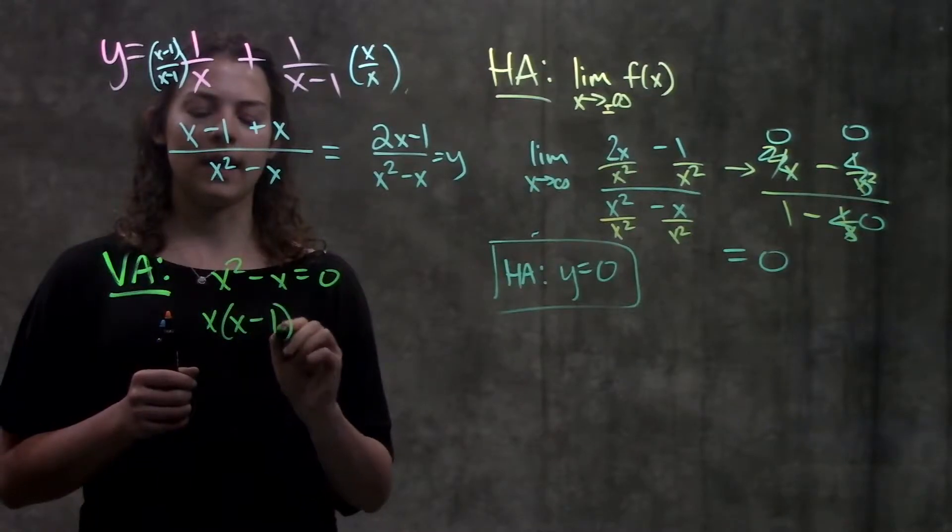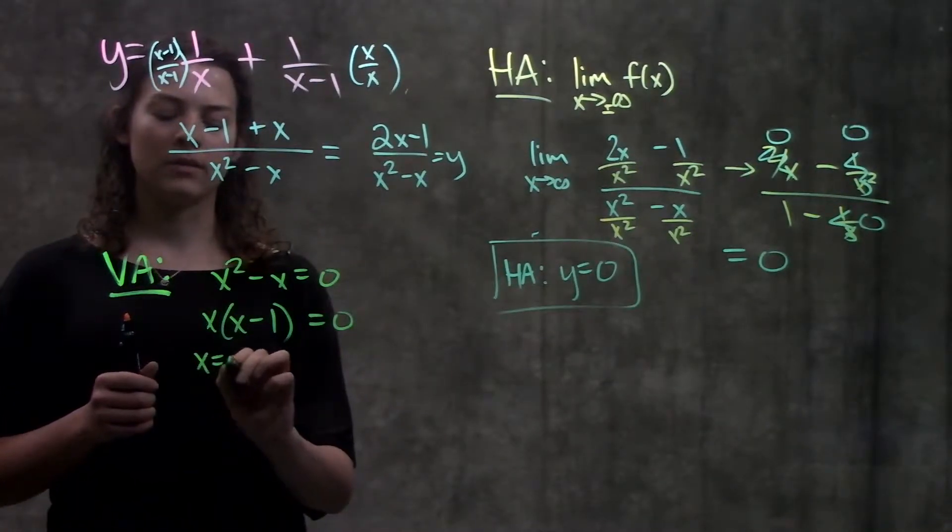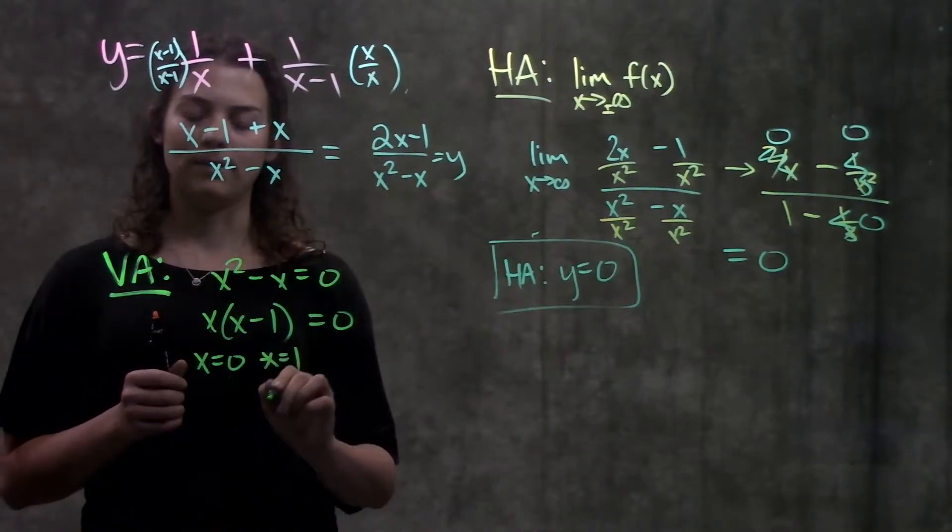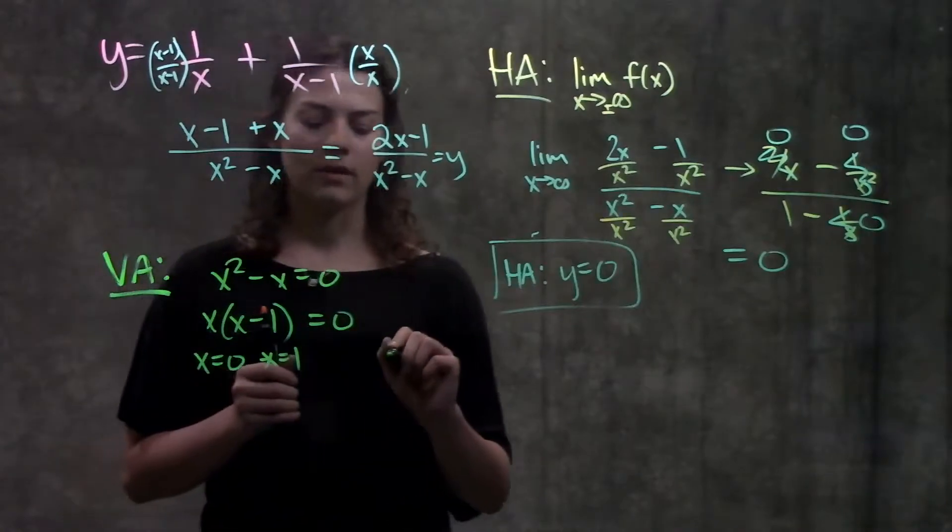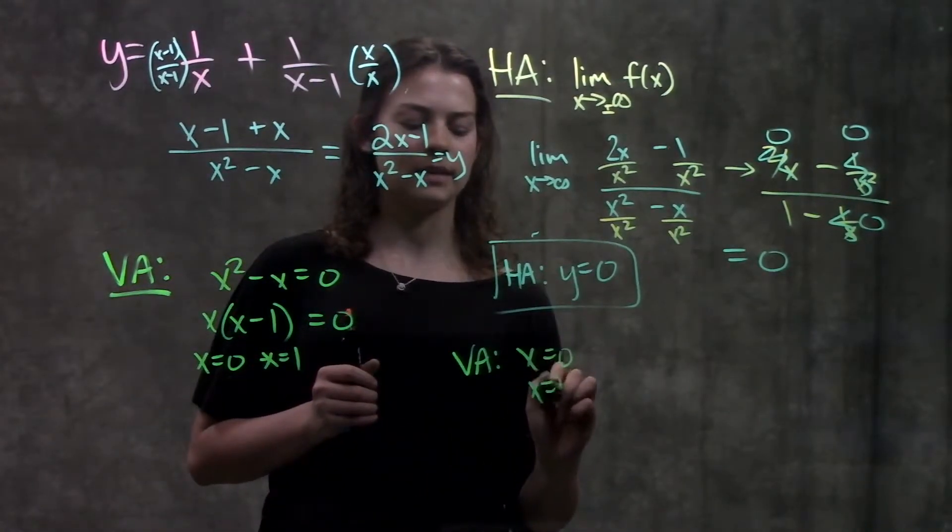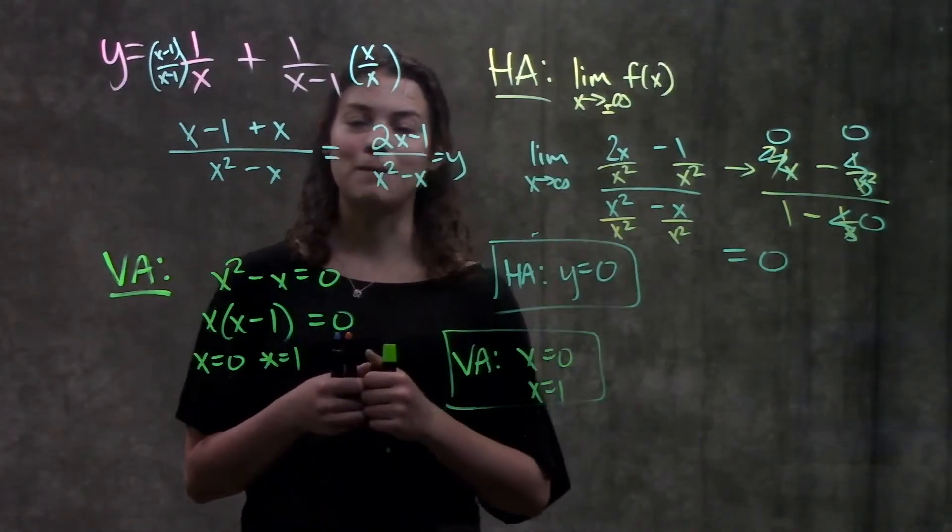Take out an x and we're left with x times x minus 1 equals 0. Set both terms equal to 0 and you get x equals 0 and x is equal to 1. So that means that our vertical asymptotes are the lines x equals 0 and the line x equals 1 and that's really it for this problem.